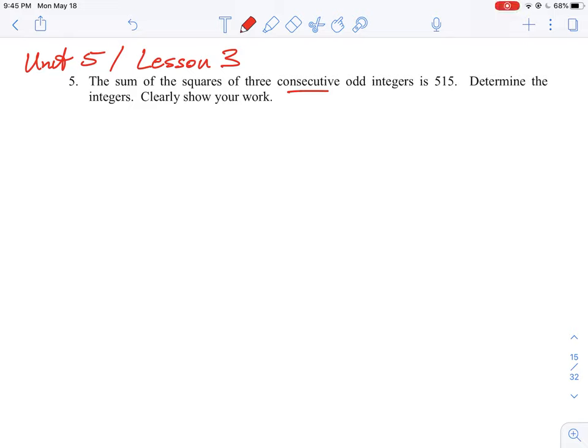Okay so let's take a look at question number five where we're asked to find three consecutive odd integers given that the condition here is that the sum of the squares would be equal to 515.